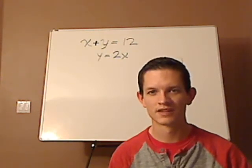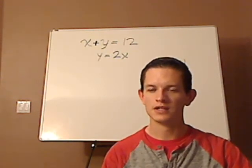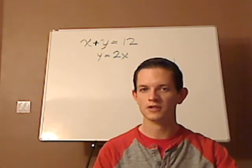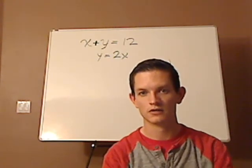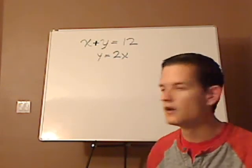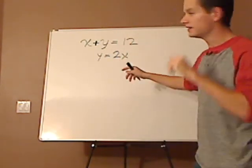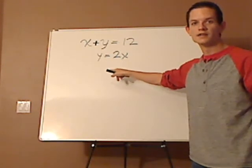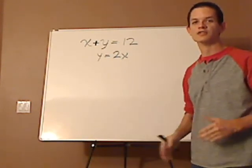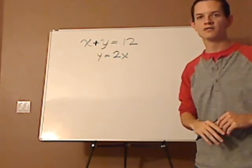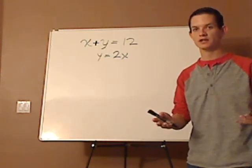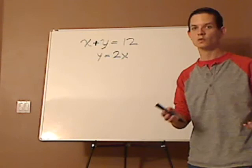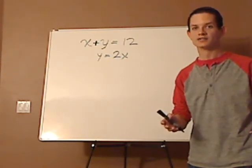It's kind of up to you on this. No matter what you do, you're going to get the same answer, no matter which method you use. However, when you look at this, Y is already by itself. So since Y is already by itself, that gives rise to opportunity. And that opportunity is substitution, because the Y is already isolated.